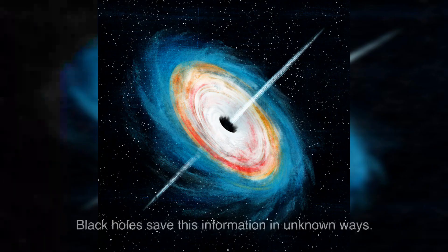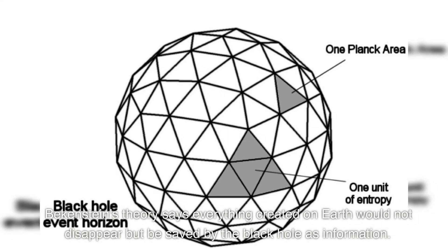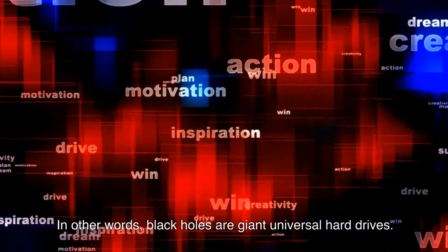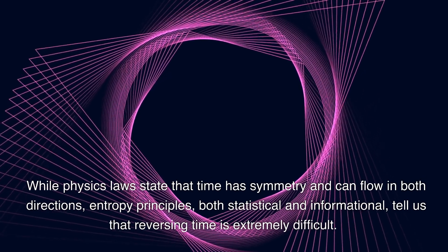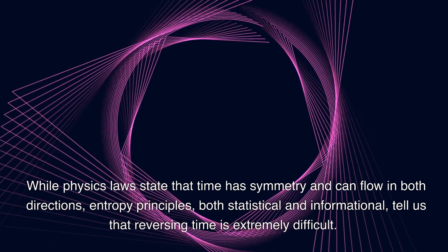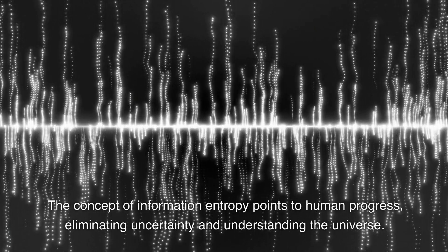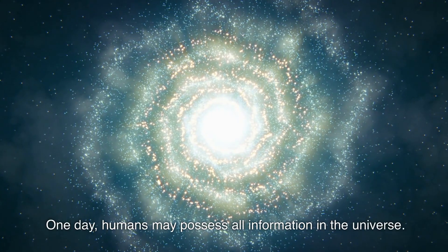Black holes save this information in unknown ways. Suppose the Earth was consumed by a black hole. Bekenstein's theory says everything created on Earth would not disappear but be saved by the black hole as information. In other words, black holes are giant universal hard drives. While physics laws state that time has symmetry and can flow in both directions, entropy principles—both statistical and informational—tell us that reversing time is extremely difficult. The concept of information entropy points to human progress: eliminating uncertainty and understanding the universe.